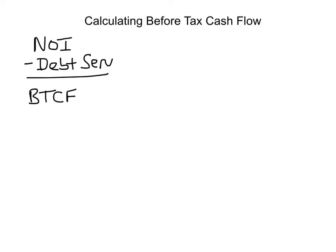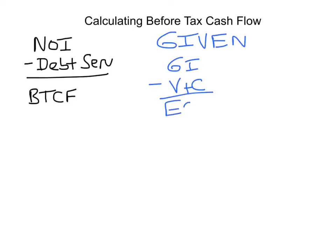The key is to remember how to calculate net operating income. Net operating income starts with given gross income minus vacancy and collection, which equals effective gross income. Recall that this is a very common distractor on an exam problem where they give you effective gross income and hope that you will back out vacancy and collection again — but you won't fall for that. Then you back out allowable operating expenses.